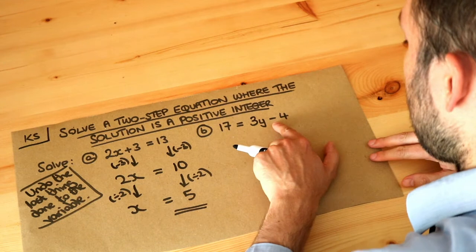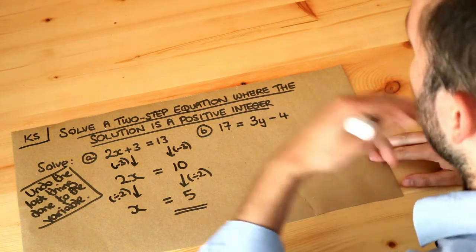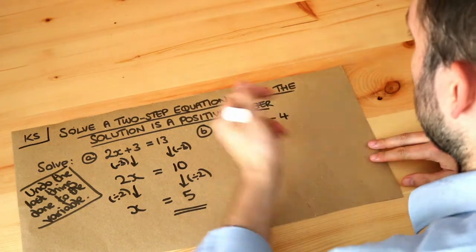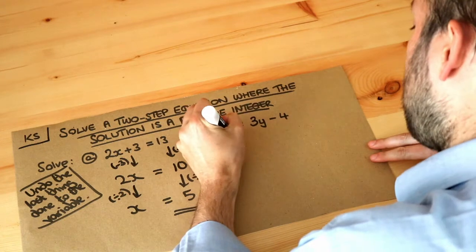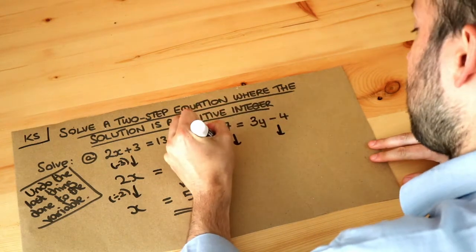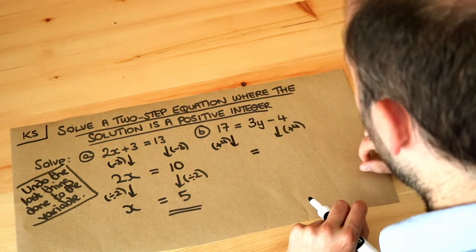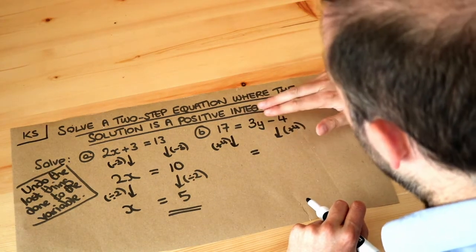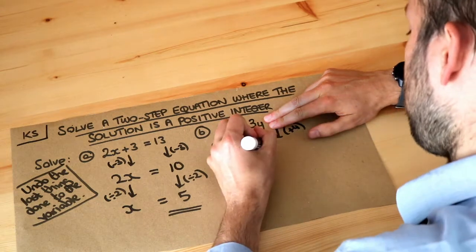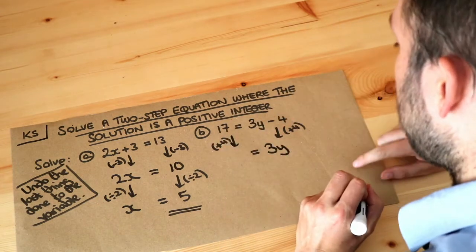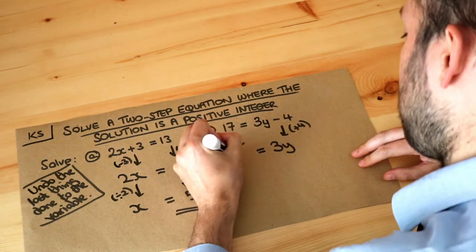Well, y was multiplied by 3. Then we subtracted 4 from it. The last thing we did to y was to subtract 4, so we need to do the opposite and add 4 to each side of the equation. So we add 4. On the right-hand side of the equation, the plus 4 cancels out the minus 4, leaving 3y. And 17 plus 4 is 21.